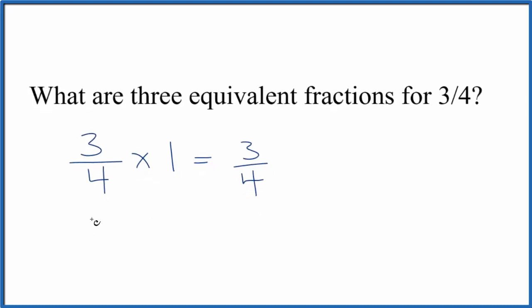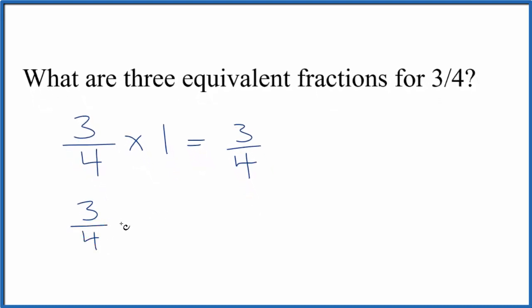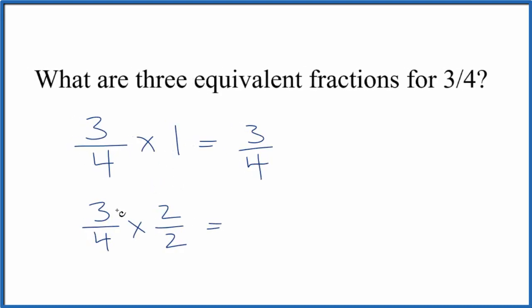We could also take three-fourths and multiply that by two over two, because two over two is the same thing as one. Two divided by two equals one, so again we haven't changed anything. But now, three times two is six, four times two is eight.